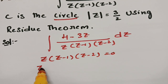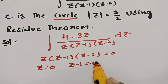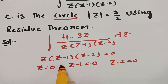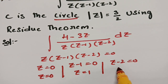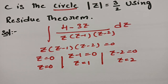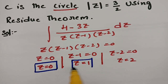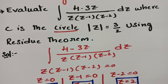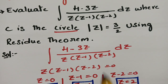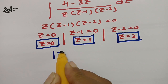Setting each factor to zero gives z = 0, z minus 1 = 0, and z minus 2 = 0. So the pole values are z = 0, z = 1, and z = 2 — three poles in total. The circle is given as |z| = 3/2, so the modulus of z equals 3/2.